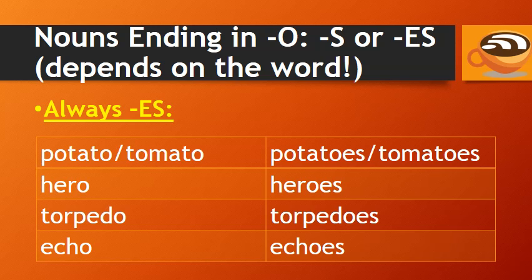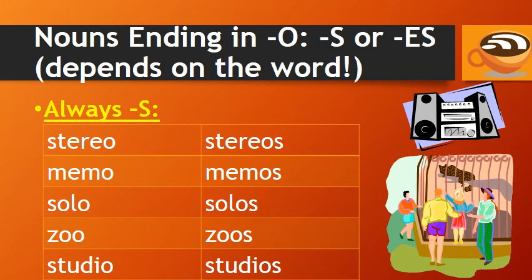As for nouns ending in O, we can make the plural by adding S or ES — it depends on the word. Here are some words that always have ES in the plural, and here are some nouns ending in O where the plural is formed by simply adding S.